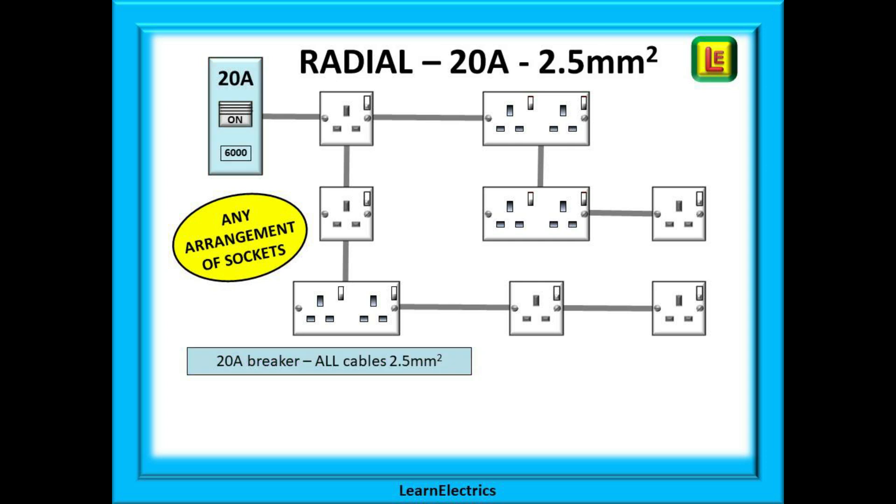If we have a 20 amp radial socket circuit the same distribution of socket supplies, but this time the cabling must be at least 2.5 mm throughout the circuit. A smaller circuit breaker allows for smaller cables but of course there may be fewer sockets or a reduced load on the circuit.